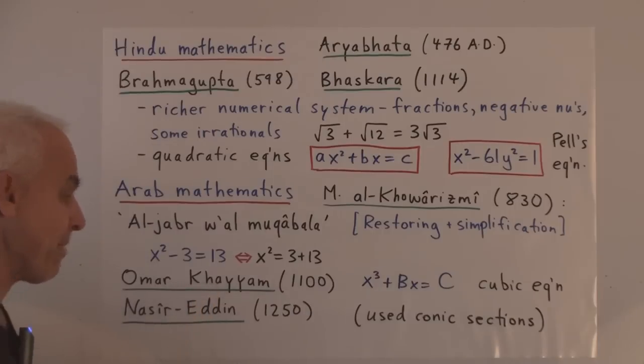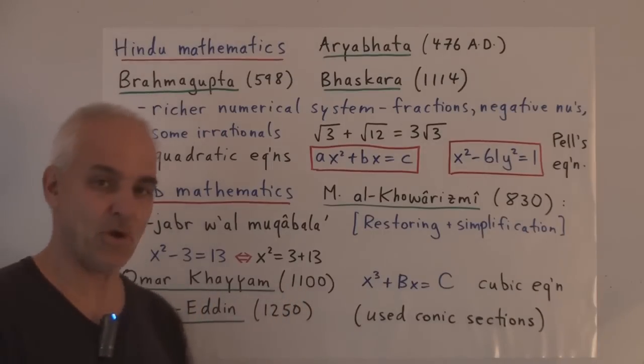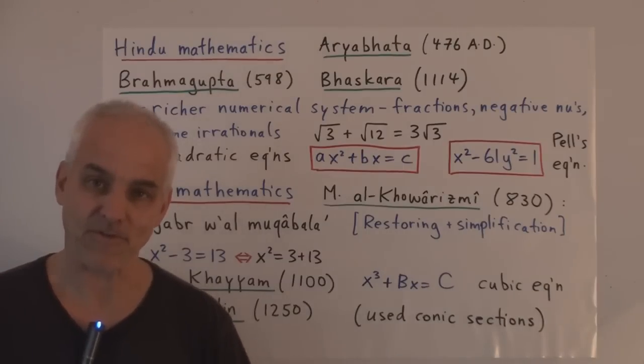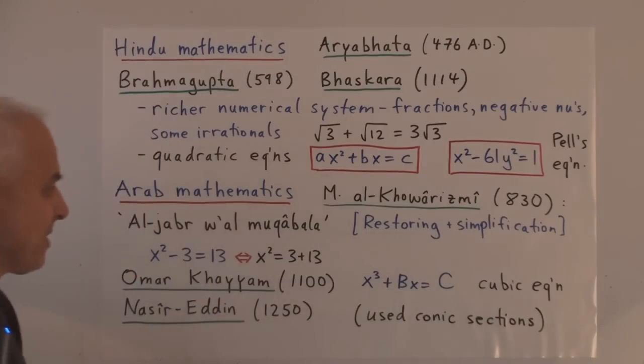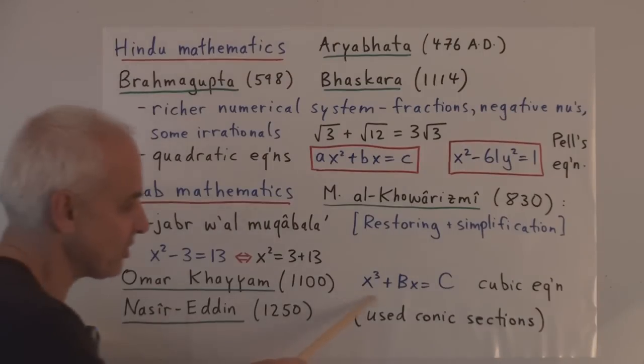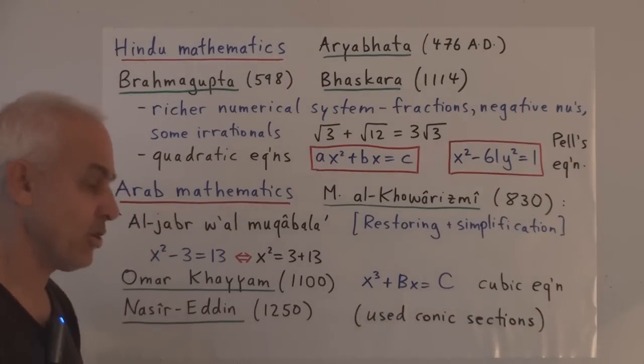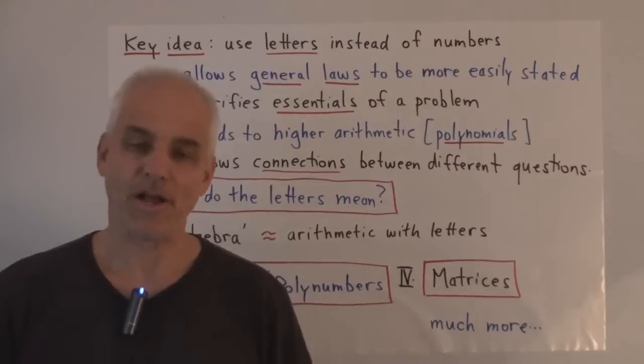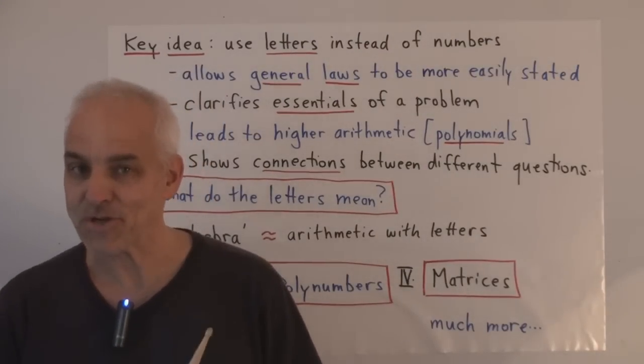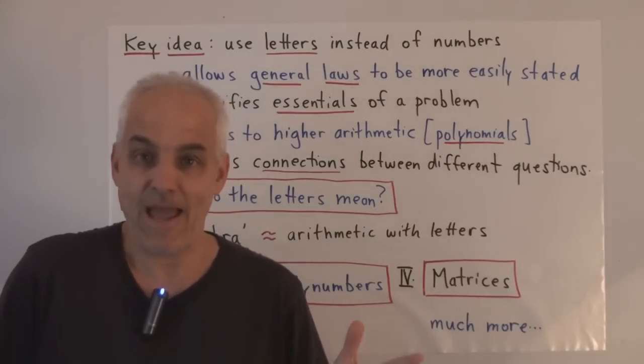Other mathematicians, Omar Khayyam, around 1100, who was notable for being a literary great as well, wrote the Rubaiyat. He was very interested in cubic equations and showed how to solve certain cubic equations using conic sections. All right, so with that very brief historical introduction, what happens in algebra?